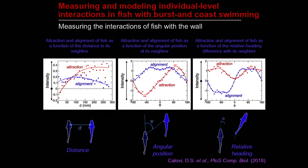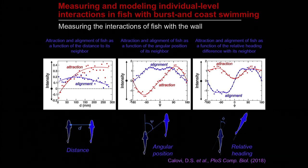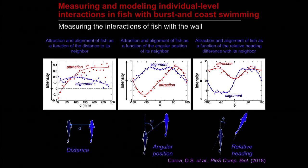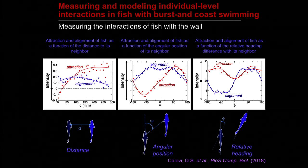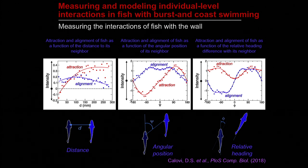Now, what about the interactions between fish? Without going into all the technical details — which can be found in our paper — we found that there is a continuous combination of attraction and alignment interaction whose intensity depends on distance, angular position, and relative orientation of individuals. This makes it very difficult to use simple 2D behavioral maps to characterize and model the functional form of this fish-fish interaction.